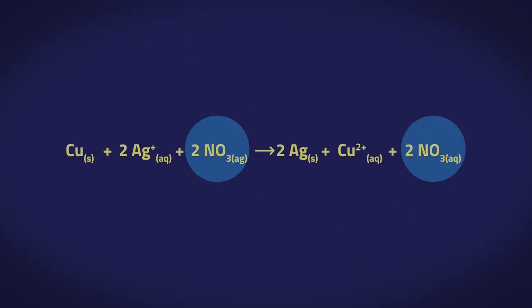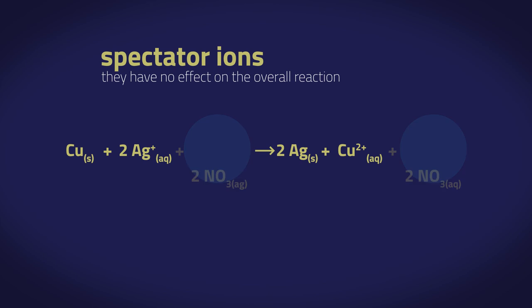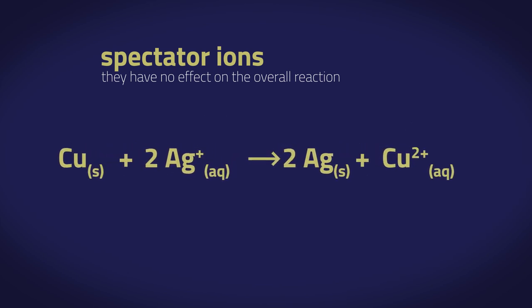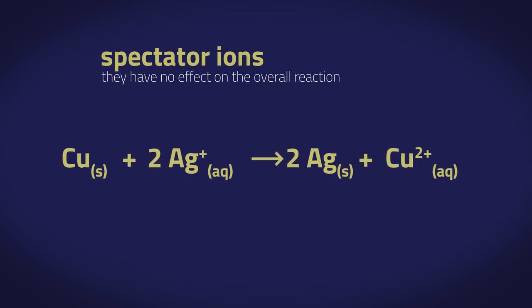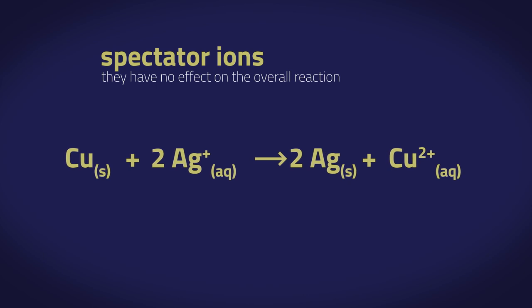What about those nitrate ions in the original equation? As the nitrate ions appear on both sides of the equation, they are called spectator ions as they have no effect on the overall reaction, much like spectators in a football match have no effect on the final result of the game.